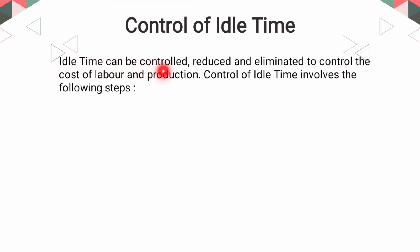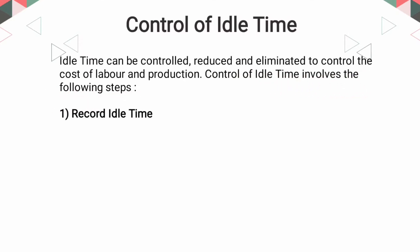Idle time can be controlled, reduced, and eliminated to control the cost of labor and production. Control of idle time involves the following steps. First, record idle time — it is necessary to record idle time, for example on the job card or separately on the idle time card.